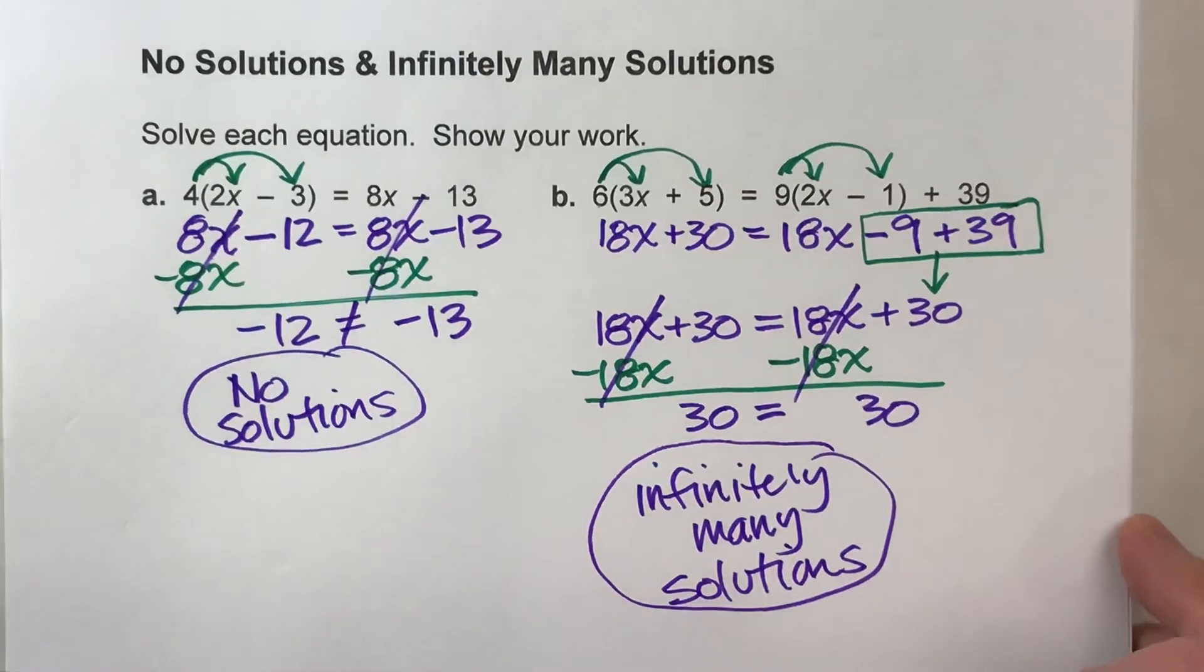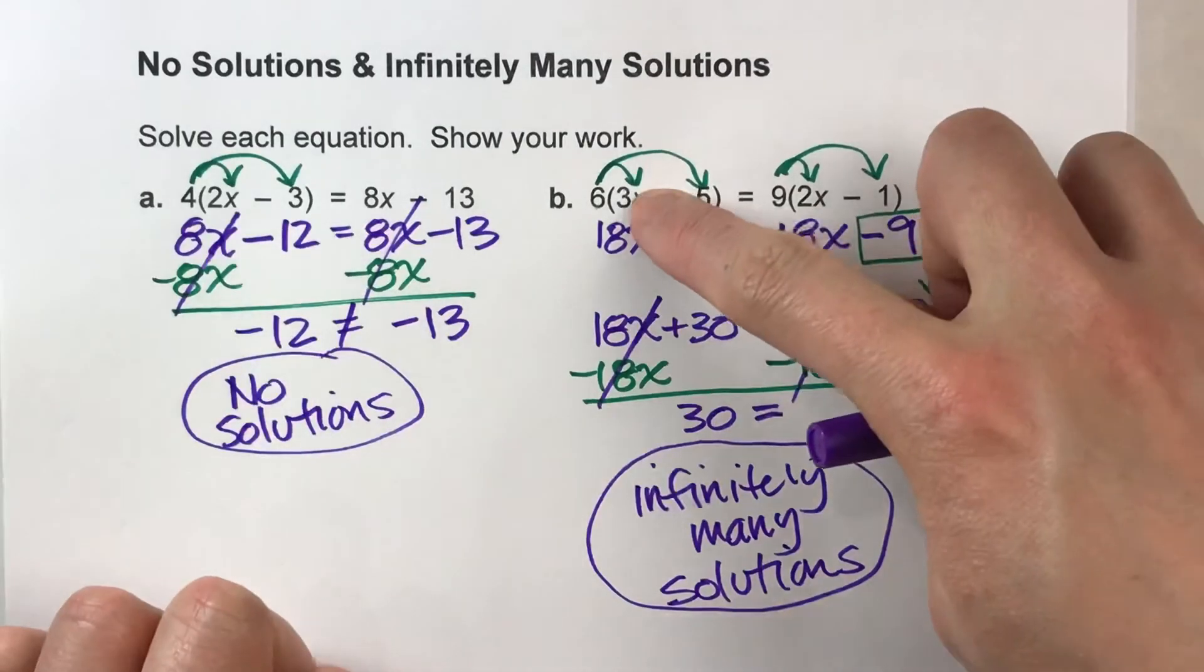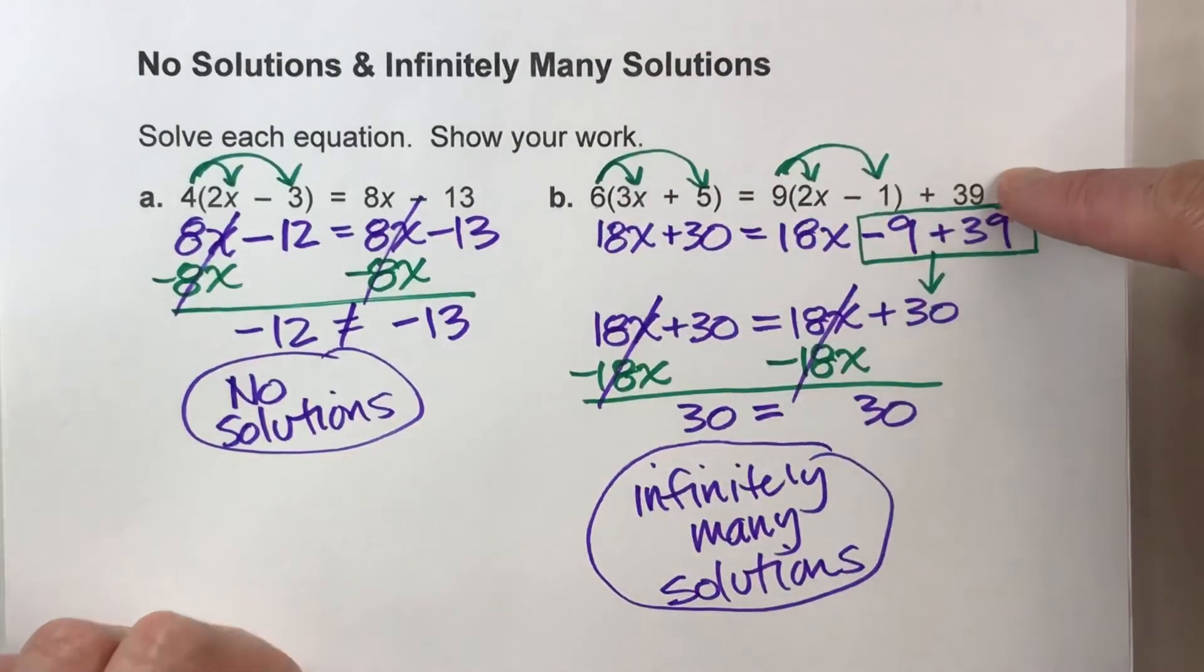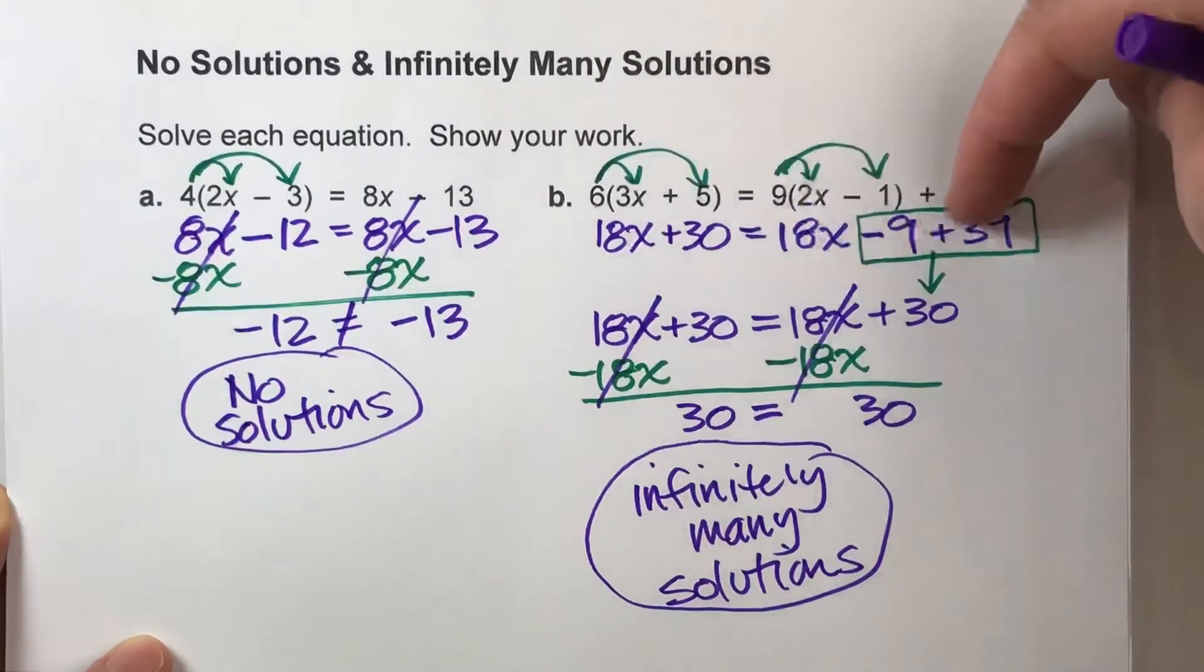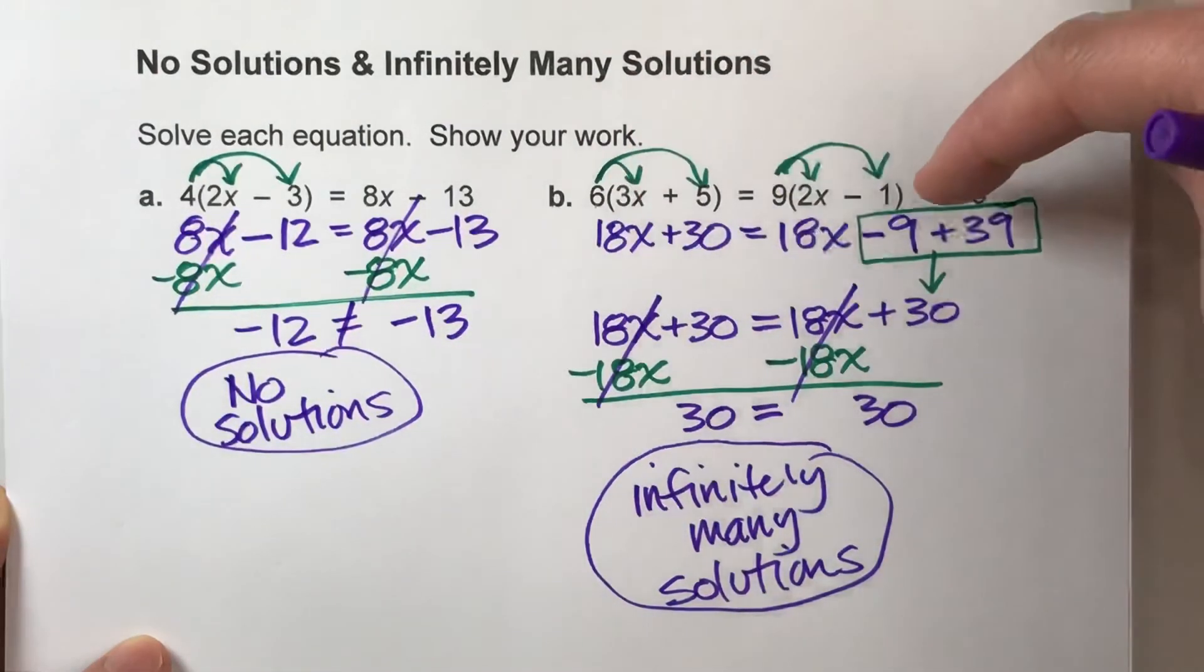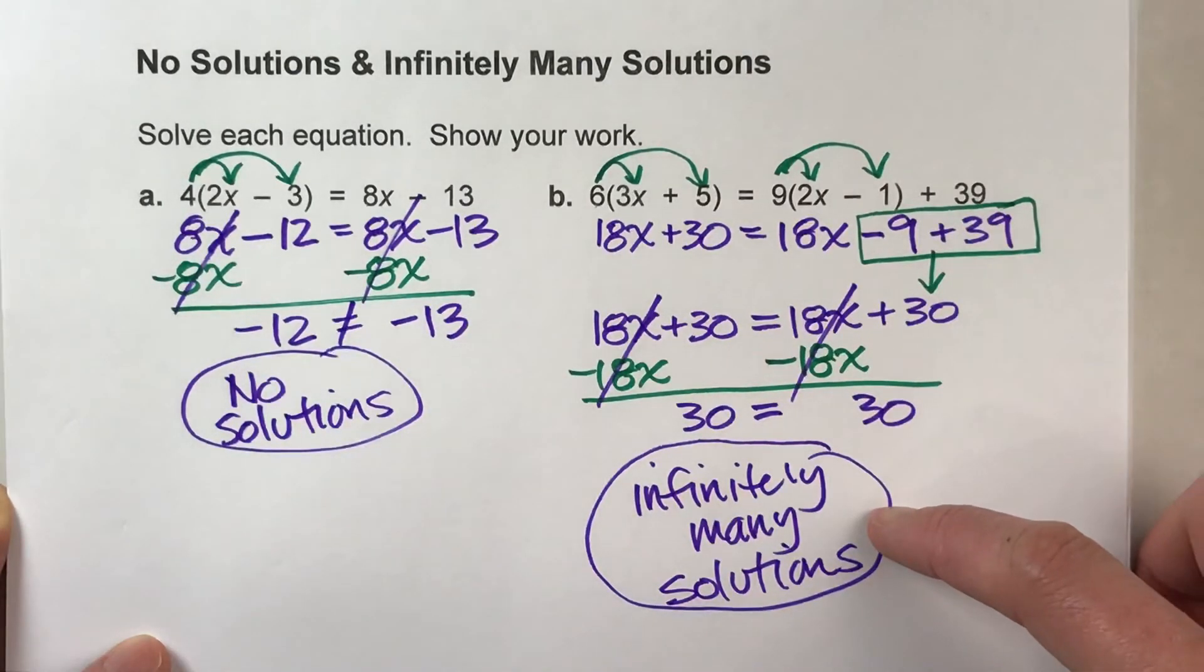So what we say here is that x has infinitely many solutions. In other words, you can pick any value of x, stick it into this original equation, and it will work. No matter what value of x you put into this original equation, this side will always equal that side. And that's what infinitely many solutions means.